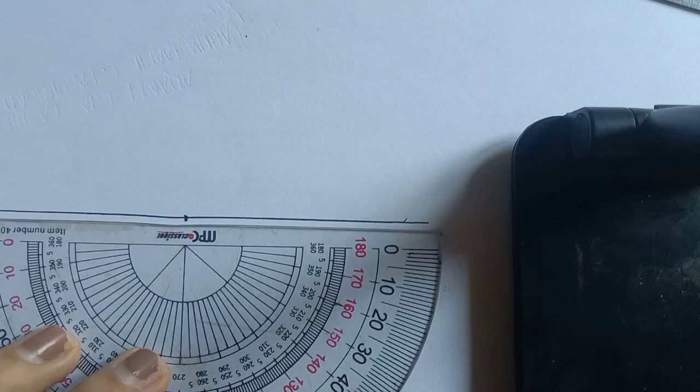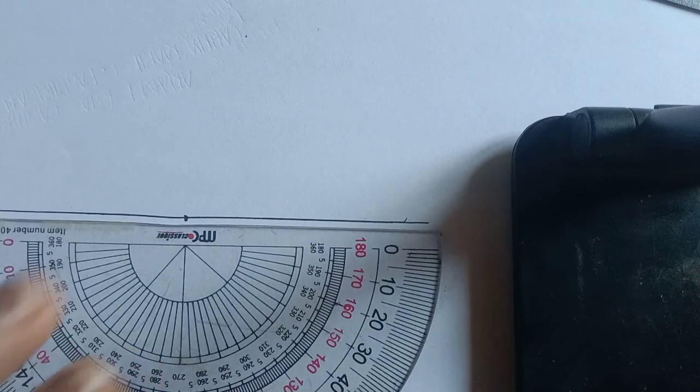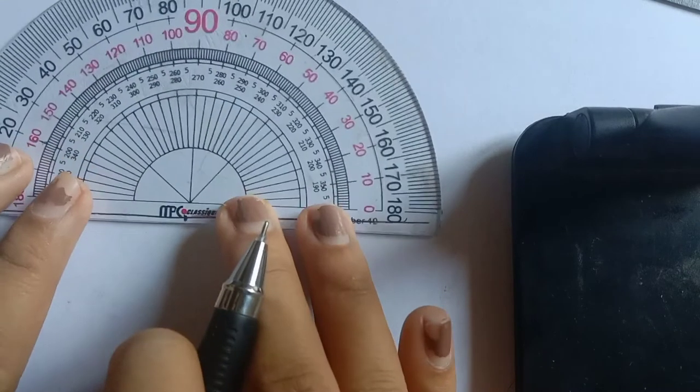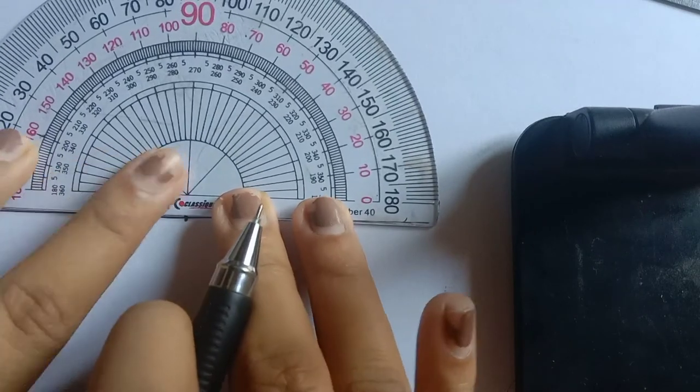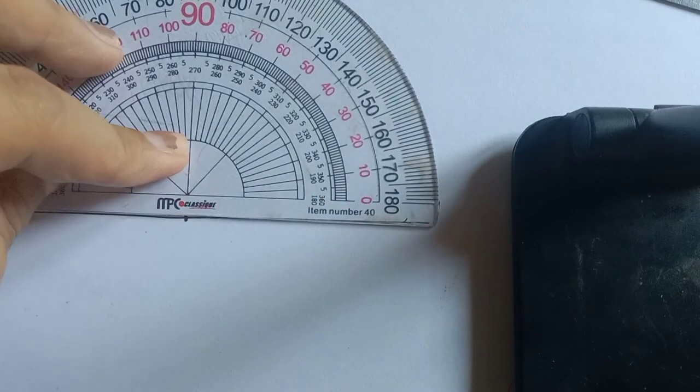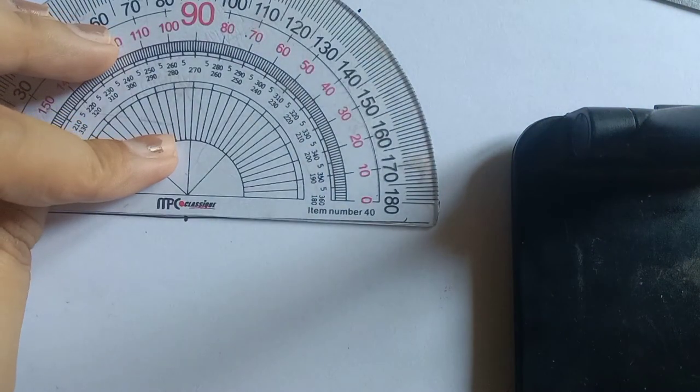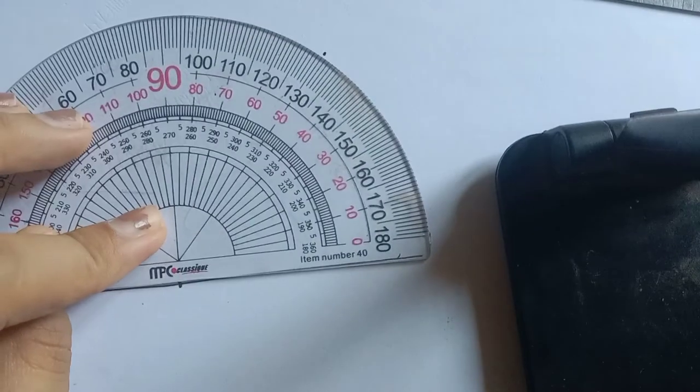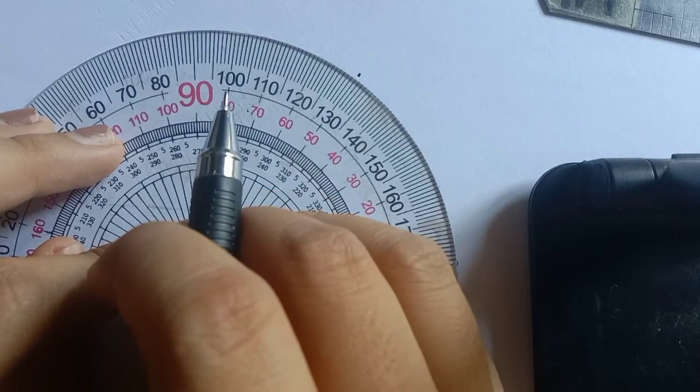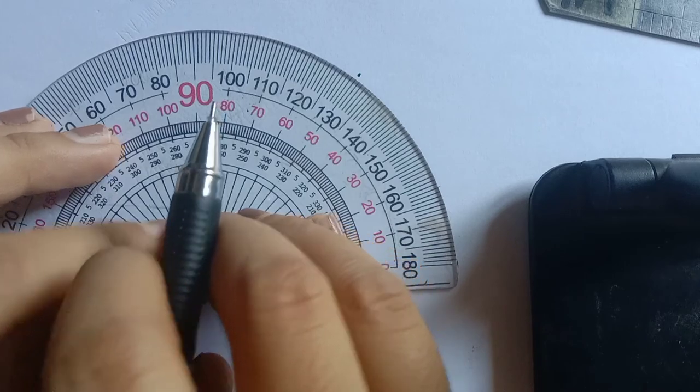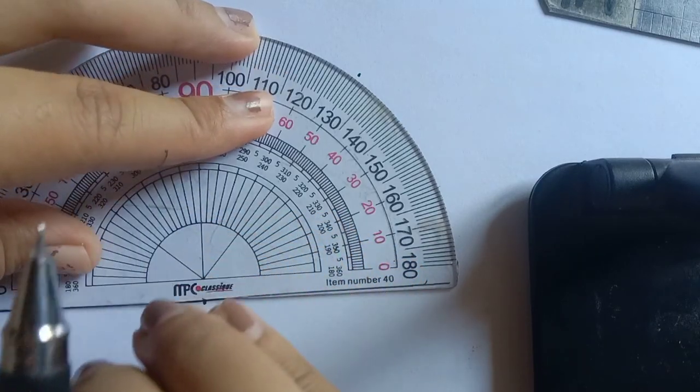Let's say that you want a 50 degree angle. You can look across from the 50, make a mark. And then, you're going to take the protractor and you'll be able to draw a line from that marking to the vertex or the point of the angle.